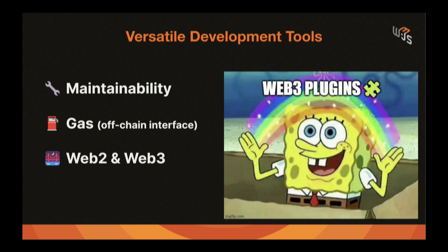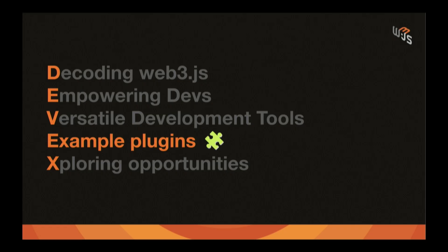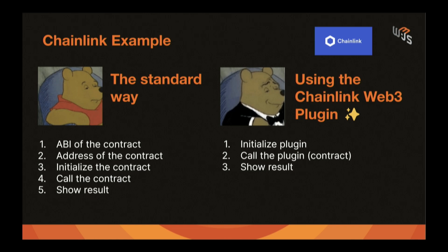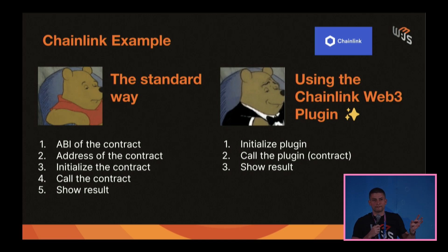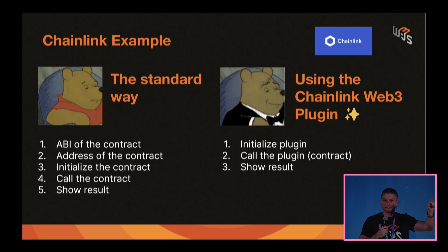Web3 plugins bridge the gap between Web3 and Web2, giving Web2 developers a really easy way to get started building in Web3. Now let's see some examples of plugins. The first one is the Chainlink DataFit plugin. Chainlink DataFit is basically a bunch of contracts on-chain that allow you to retrieve the price of a specific pair. So if you want to know the price of Bitcoin, you can call the contract that has the BTC/USD price and it will return the Bitcoin price in USD.